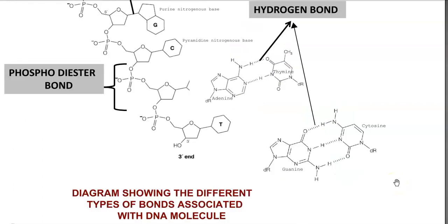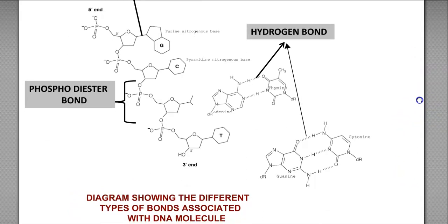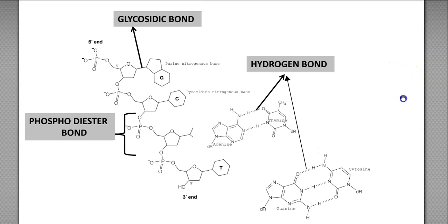An important point related to the DNA molecule is what types of bonds are present within it. Between one nucleotide and another, they are joined by a phosphodiester bond. Between the sugar and the nitrogenous base — whether it is a purine or pyrimidine — the type of bond is a glycosidic bond. The other important bond is the hydrogen bond, which helps in stabilizing the double strands of the DNA molecule and enables complementary base pairing.